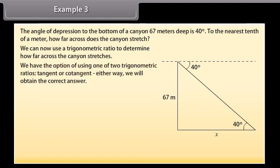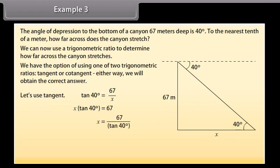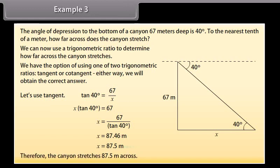We can now use a trigonometric ratio to determine how far the canyon stretches. We have the option of using one of two trigonometric ratios, tangent or cotangent; either way, we will obtain the correct answer. Let us use tangent. Tan 40 degrees equals 67 upon X. X into tan 40 degrees equals 67. X equals 67 upon tan 40 degrees. X equals 87.46 meters. X equals 87.5 meters. Therefore, the canyon stretches 87.5 meters across.